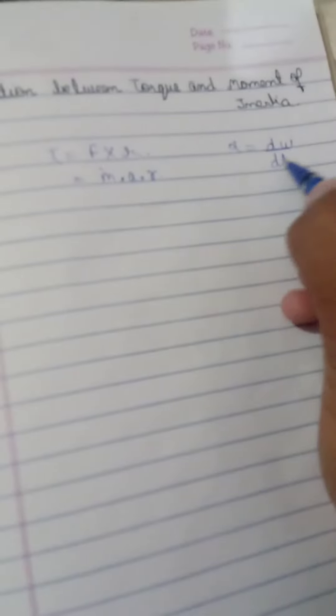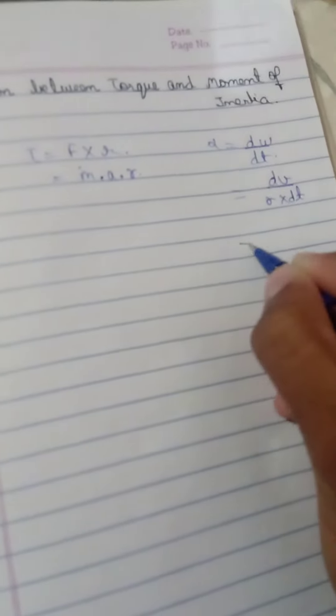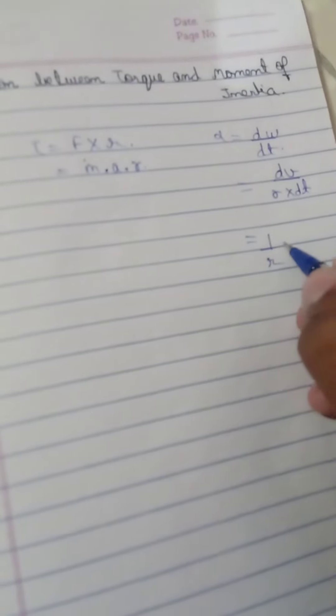We know that angular acceleration is d omega by dt. We write d omega as dv upon r, so we take 1 upon r times dv upon dt, which we write as a.